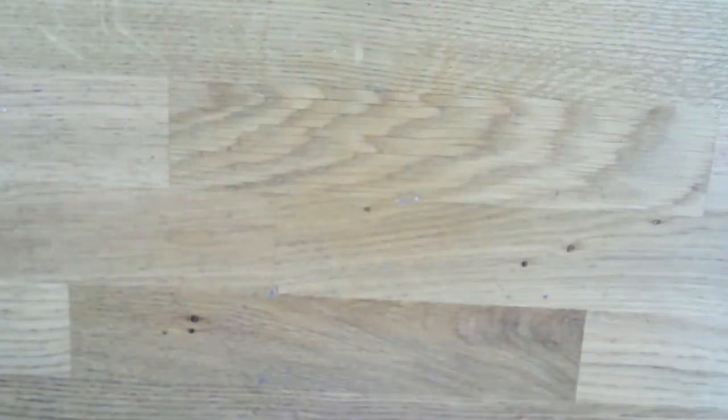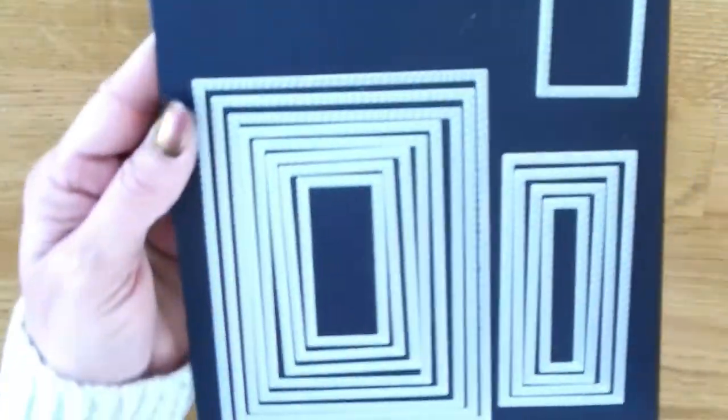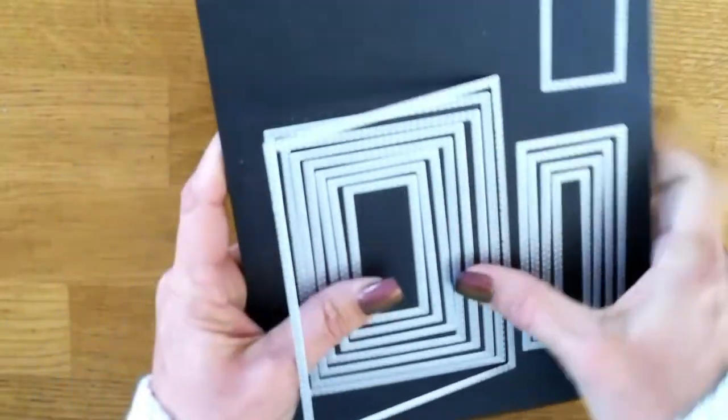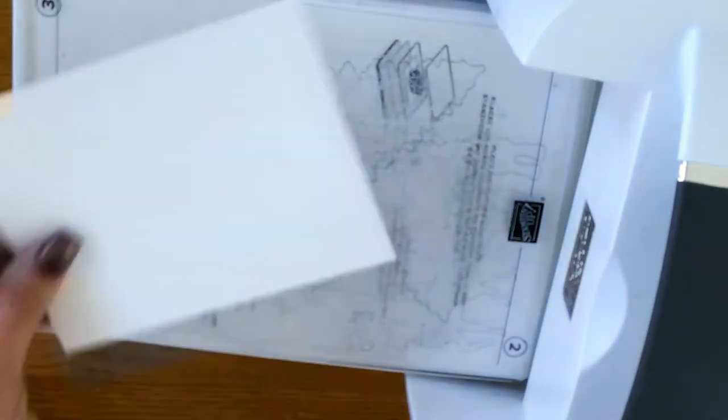You're going to need scratch paper in Real Red, Blushing Bride, Old Olive, and Soft Seafoam. You want to pull in your dimensionals, your snail, along with some glue dots. We have our stitched rectangles and our stitched shapes dies that we're going to be using as well.